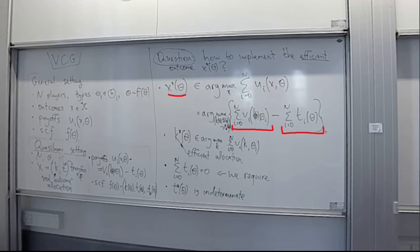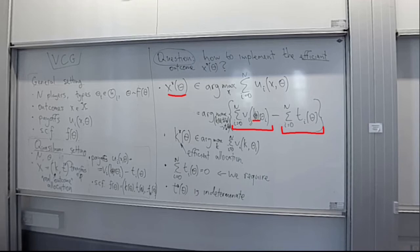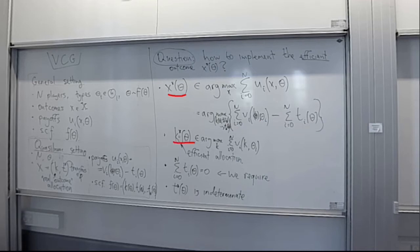What can we tell about the efficient outcome just by looking at this expression? First, the efficient allocation k star of theta and the efficient transfers t star of theta can be determined independently of one another, because in the objective function k only enters the first sum while transfers t_i only enter the second term. So we can choose k to maximize the first term and then choose t's to maximize the second. We take k star of theta to be the maximizer of the sum of utilities of all players including the designer, and call this the efficient allocation.